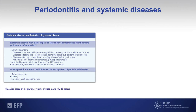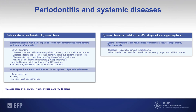Also acquired immune deficiency diseases like HIV infection, and inflammatory diseases like inflammatory bowel disease. Then, of course, there are other systemic disorders influencing the pathogenesis, like diabetes, smoking, and nicotine dependence. Obesity would be another example. On the other hand, we have systemic diseases or conditions that affect the periodontal supporting tissues independently of inflammatory periodontitis — examples here are neoplasms such as oral squamous cell carcinoma, and other disorders like Langerhans cell histiocytosis.